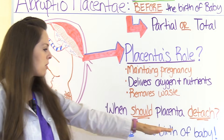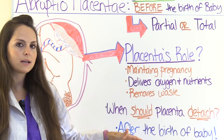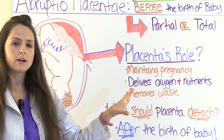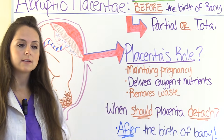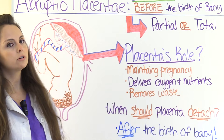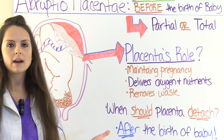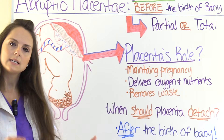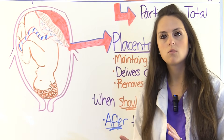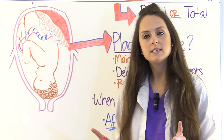The placenta should normally detach from the uterine wall after birth, when we no longer need it — its whole goal is to maintain life for the child. Once the baby is delivered it can come out, but if it comes out prematurely we have issues. The time for it to be delivered can vary anywhere from ten to twenty minutes after birth.